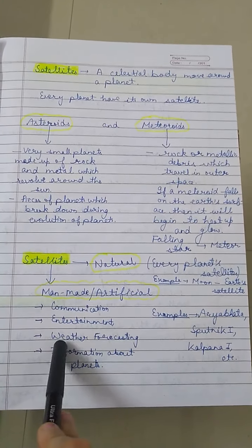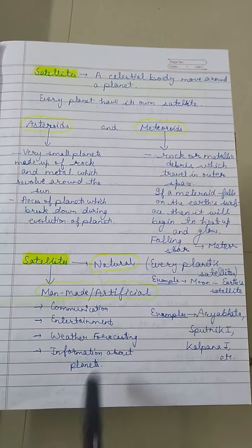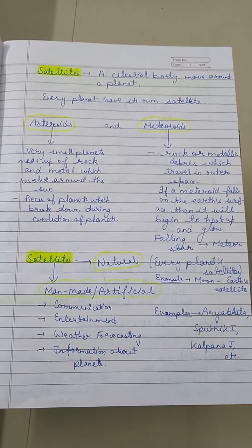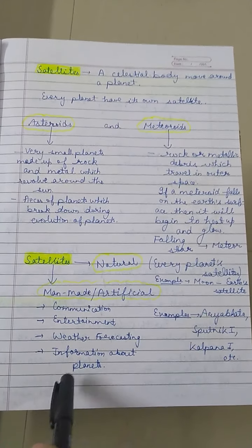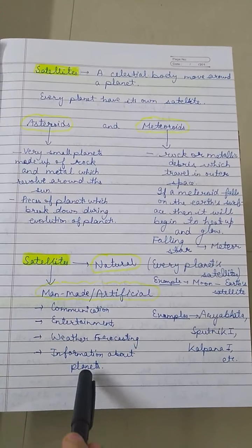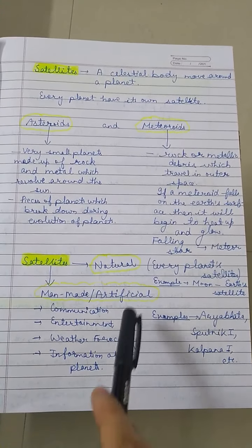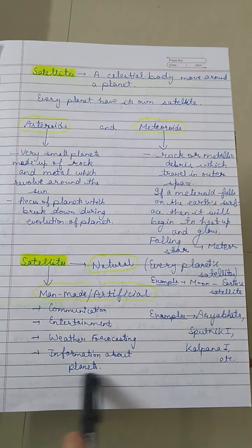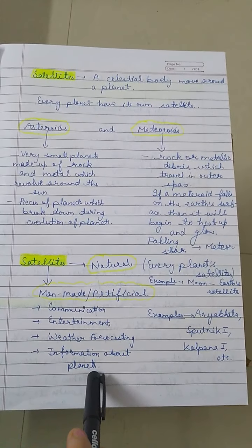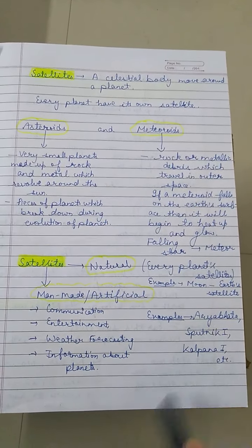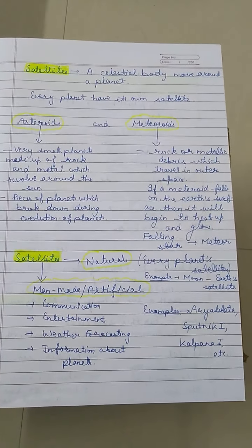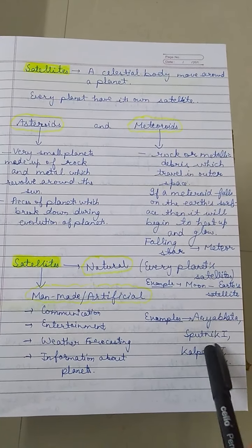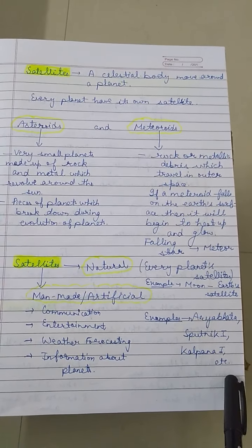Then, weather forecasting. Due to these satellites we can predict the weather for the upcoming days. Then, information about planets — by using artificial satellites, we can also get information related to other planets. Here are some examples of artificial satellites: Aryabhata, Sputnik 1, Kalpana 1, etc.